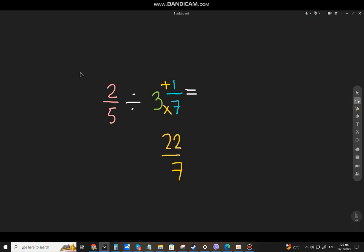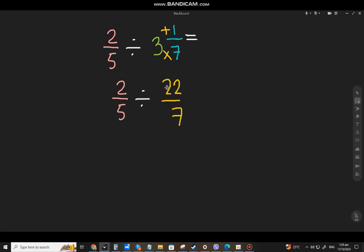Now, let's get the reciprocal of the divisor, which is 22 over 7. That will be 7 over 22. And just copy the dividend. Remember, if you get the reciprocal, you will change the division sign to a multiplication sign, which is times.